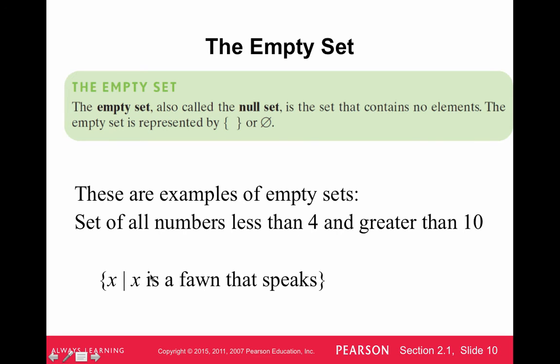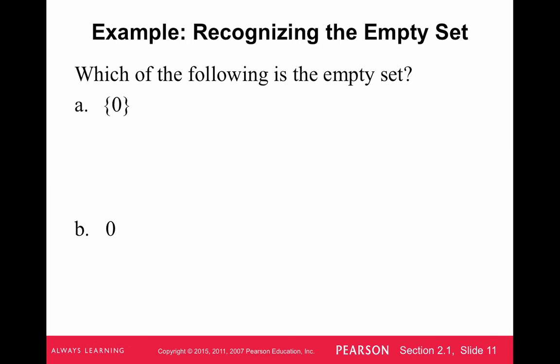Or we can say the set of X. X is a fawn that speaks. I think a fawn is a bird. I hope I don't look too stupid, but I think that's what it is. And so maybe they're talking speaks English. So that's an empty set.